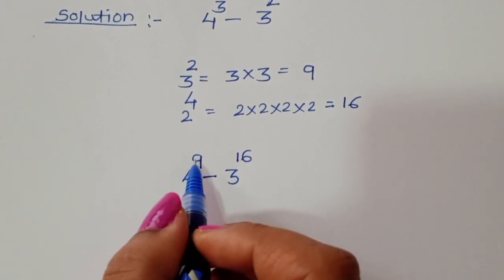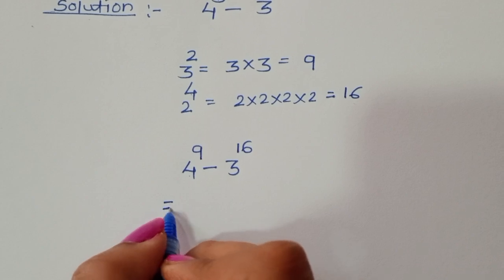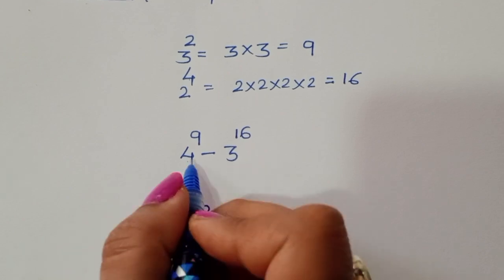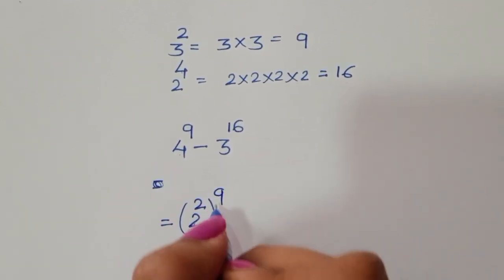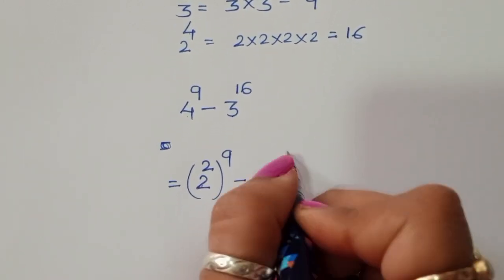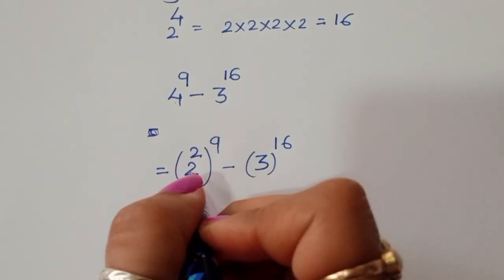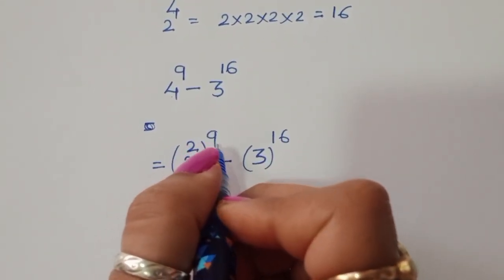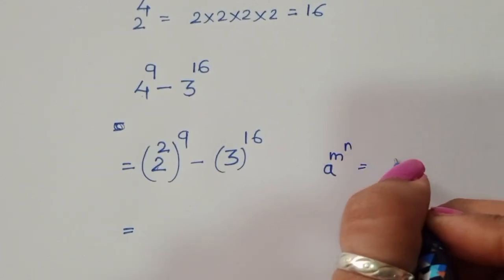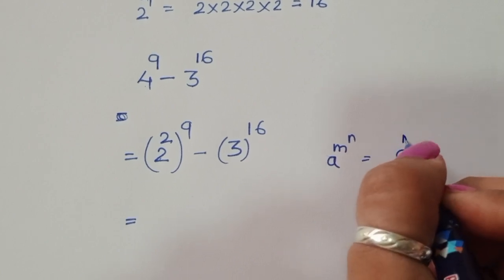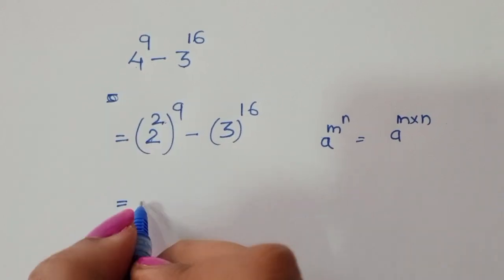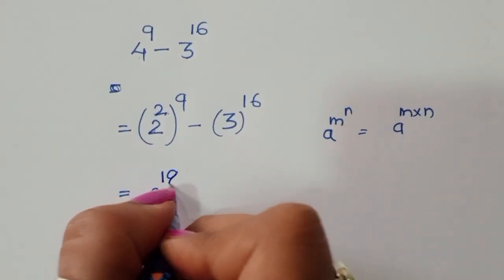Now for 4 power 9, we convert 4 into a power of 2: since 2 power 2 is 4, we write (2 power 2) power 9. We use the formula: if a power m power n is given, we can write a power m into n. So this becomes 2 power 2 times 9, which is 2 power 18, minus 3 power 16.